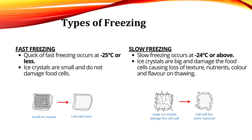There are two types of freezing process. First, fast freezing occurs at minus 25°C or less; ice crystals formed are small and do not damage food cells. Fast freezing is a flash freeze which takes around 5 to 10 minutes, and a high amount of cryoprotectant lessens the chance of ice crystal formation. Cryoprotectants are chemical compounds which prevent cells or tissues from damage due to freezing. Second, slow freezing occurs at minus 24°C or above; ice crystals are large and damage food cells, causing loss of texture, nutrients, color, and flavor on thawing. Slow freezing is a gradual freeze taking around 3 hours, with lower amounts of cryoprotectant, resulting in a greater chance of ice crystal formation.